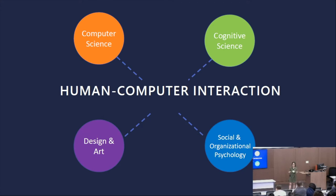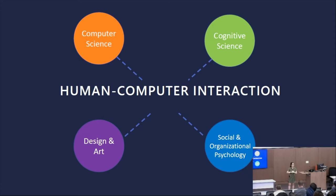We use different methods from these fields to understand the challenges that people have when interacting with existing technologies, and what workarounds they use to overcome those challenges. We use those insights to improve and iterate on technology. We also evaluate the technologies we build — either in the lab setting or in the field, meaning we deploy the technologies we build and evaluate how people actually use them.